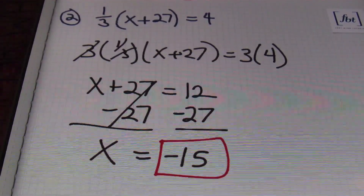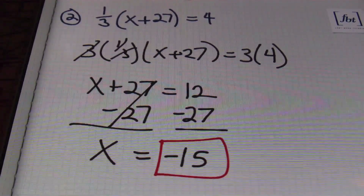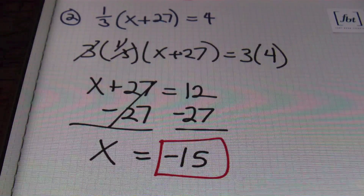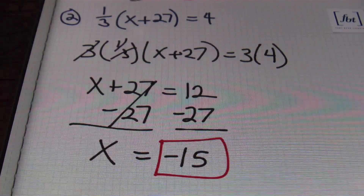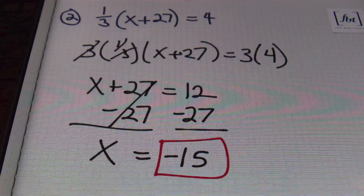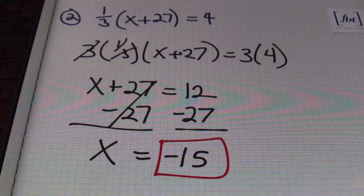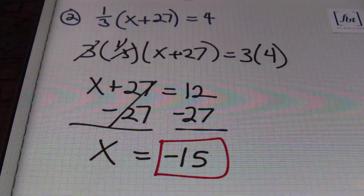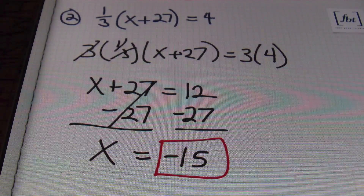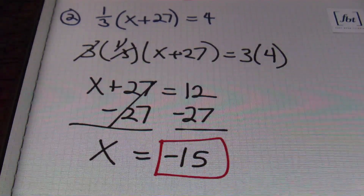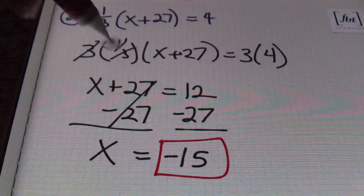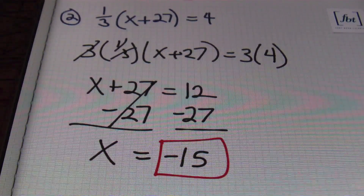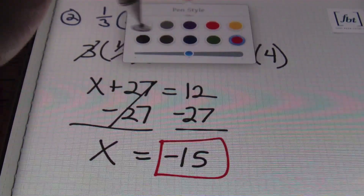So once again, our first step is to get rid of the fractions by multiplying by the common denominator of all the terms. You didn't necessarily have to worry about what was inside the parentheses, because it's protected as long as you have something on the outside multiplying. That one-third — we want to get rid of that fraction — so we multiply by three on both sides of the equal sign, which cancels out the denominator exactly as we wanted.